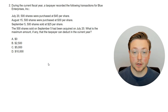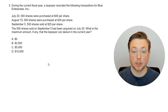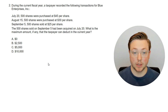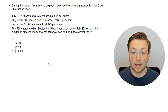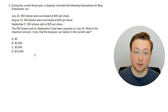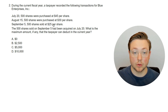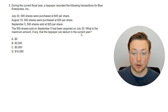Here's the next question. During the current fiscal year, a taxpayer recorded the following transactions for Blue Enterprises, Inc. July 20th: 500 shares purchased at $45 per share. August 15th: 500 shares purchased at $30 per share. September 5th: 500 shares sold at $25 per share. The 500 shares sold on September 5th had been acquired on July 20th. What is the maximum amount, if any, that the taxpayer can deduct in the current year?